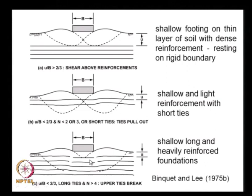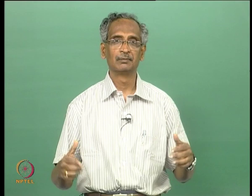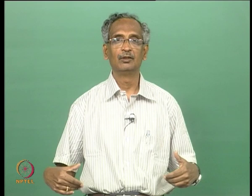The third possible failure mode is rupture of the reinforcement. This happens when the topmost reinforcement layer is at a close enough depth (u/b ≈ 2/3), with very long and very densely placed reinforcement layers (n > 4). Because the reinforcement length is so high, they will not pull out and failure is governed by rupture. As pressure increases, failure propagates from the topmost to the bottommost reinforcement layers — as the upper layer breaks, higher load is transferred to the bottom layers, causing progressive failure.